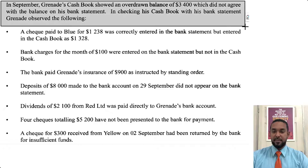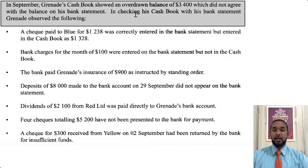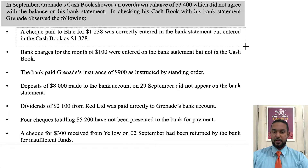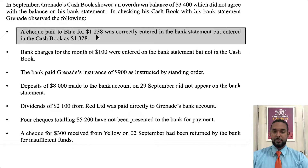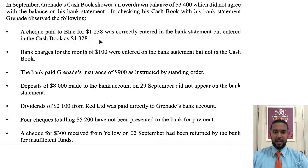As per usual we take a read of the information. In September, Grenade's cash book showed an overdrawn balance of 3,400, which did not agree with the balance in his bank statement. In checking his cash book with his bank statement, Grenade observed the following. A check paid to Blue for 1,238 was correctly entered in the bank statement but entered in the cash book as 1,328. We're going to have to fix the cash book for that because the cash book contained an error.